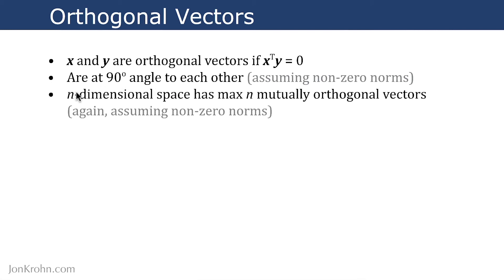Something to note here is that in an n-dimensional space, there are at most, there's a maximum of n mutually orthogonal vectors. So this means that if we're in a two-dimensional space, there are at most two mutually orthogonal vectors. Or in a three-dimensional space, there's at most three of them. Again, I'm assuming here that all of the vectors have length. Of course, if they have no length, then they can easily be orthogonal, but they're not very interesting.